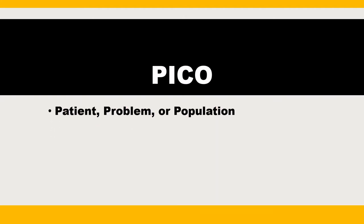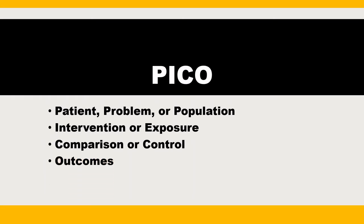First, when you're looking for evidence-based literature, it may be helpful to frame your topic into a PICO format — that is, patient, problem, or population; intervention or exposure; comparison or control; and outcomes. Don't worry if you don't have all the elements yet — this is just to help you get started. In fact, it's better if you start your search broadly, with search terms that define the patient, problem, or population, and search terms that describe the intervention or exposure.